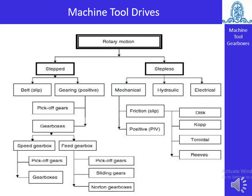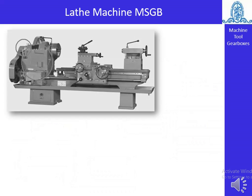First of all, we will see the different classifications of machine tool drives. The rotary motion is classified into two parts: step drive and stepless drive. In the step drive, there are various types such as belt and gears. In the stepless drive, there are mechanical, hydraulic, and electrical drives. We are mainly focusing on gear drives.